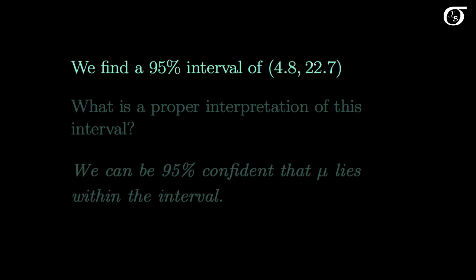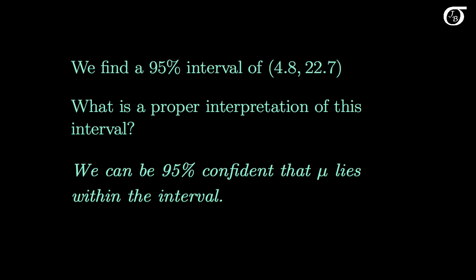Suppose we find a 95% confidence interval for the population mean of 4.8 to 22.7. What is a proper interpretation of this interval? The short version is we can be 95% confident that the parameter mu lies within the interval. Note that the interpretation relates to the parameter mu and not the statistic x̄. The interpretation of a confidence interval always relates to a parameter and never a statistic.